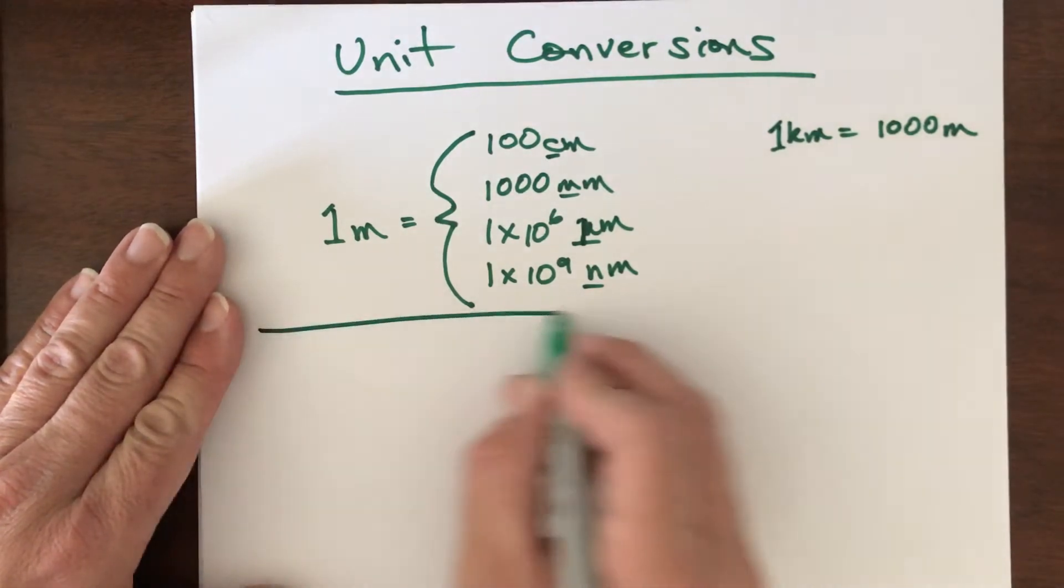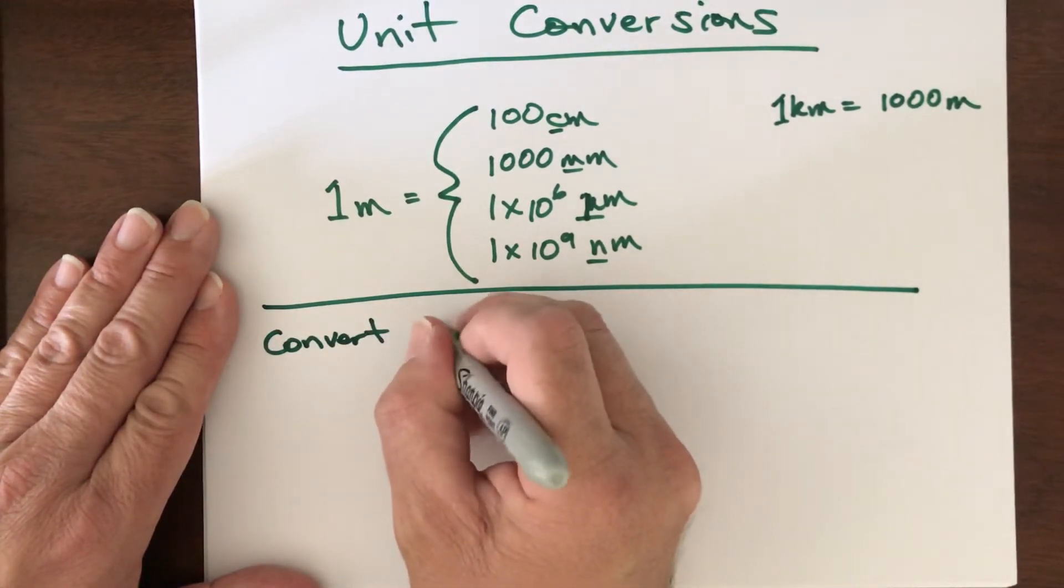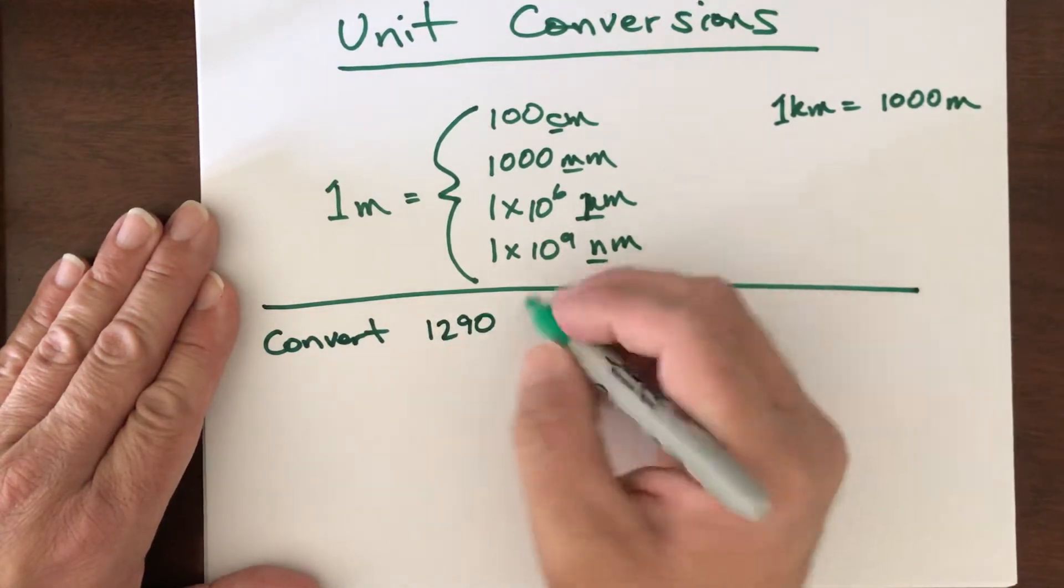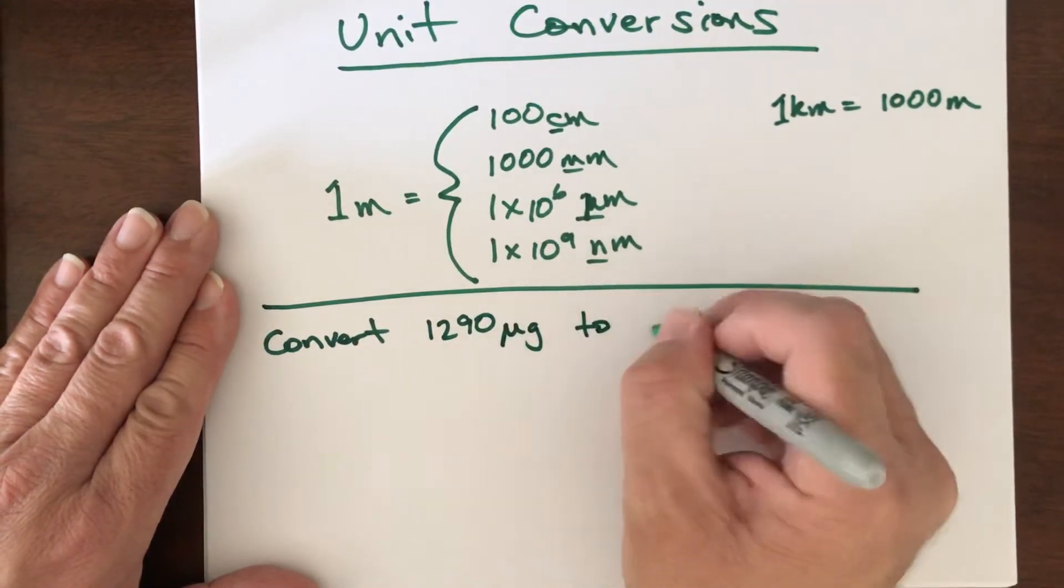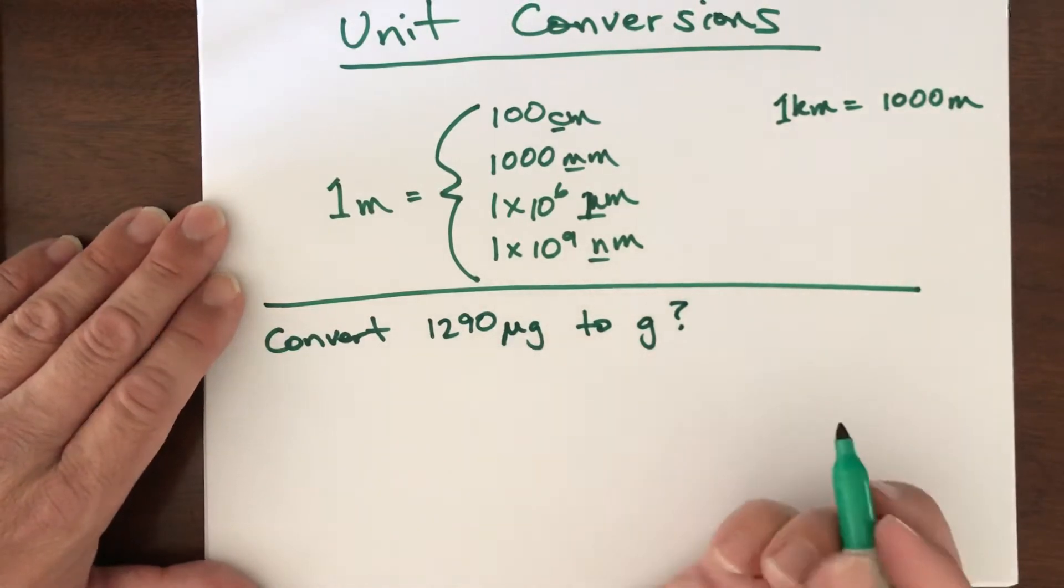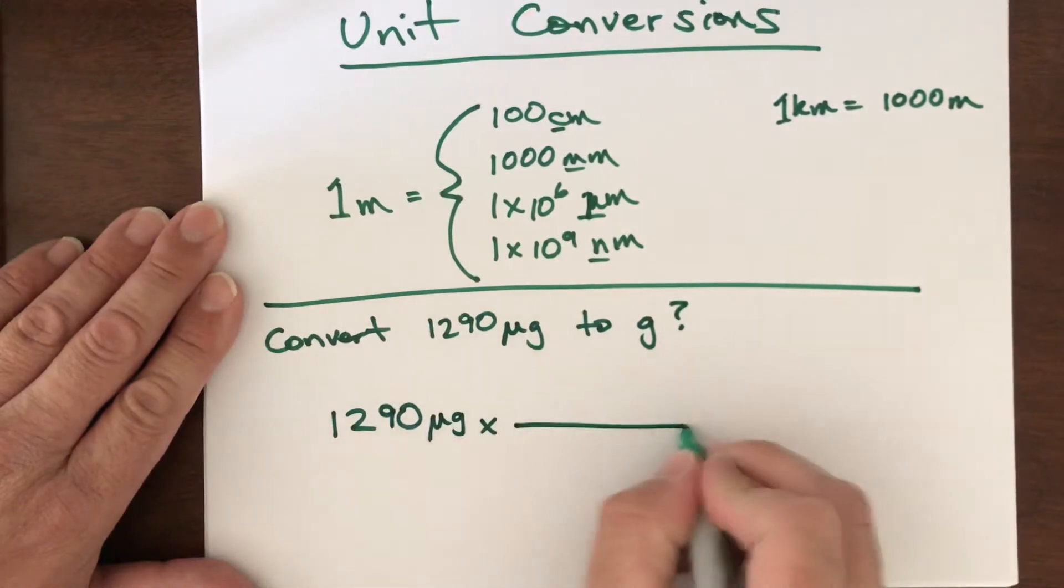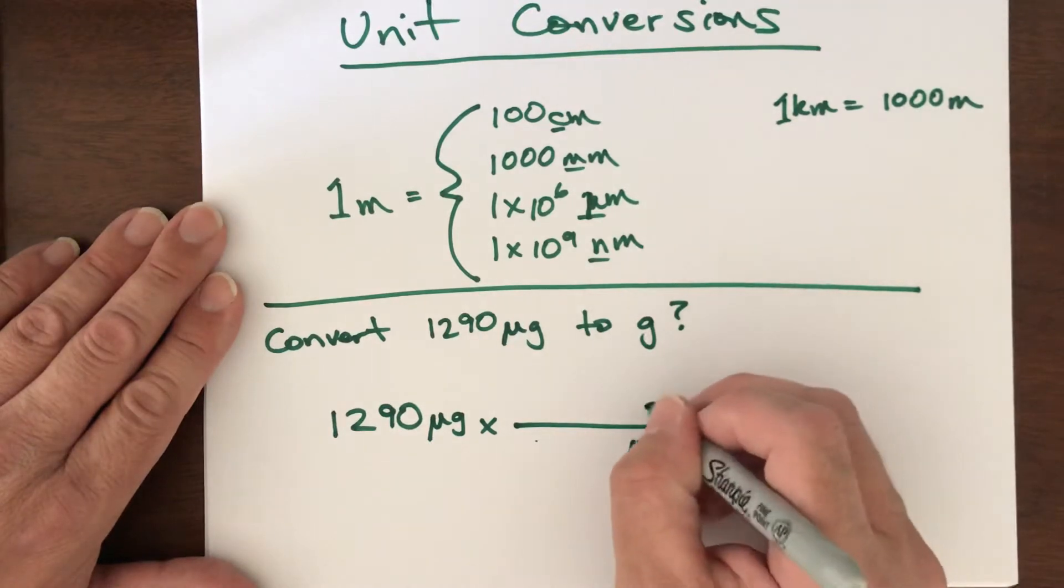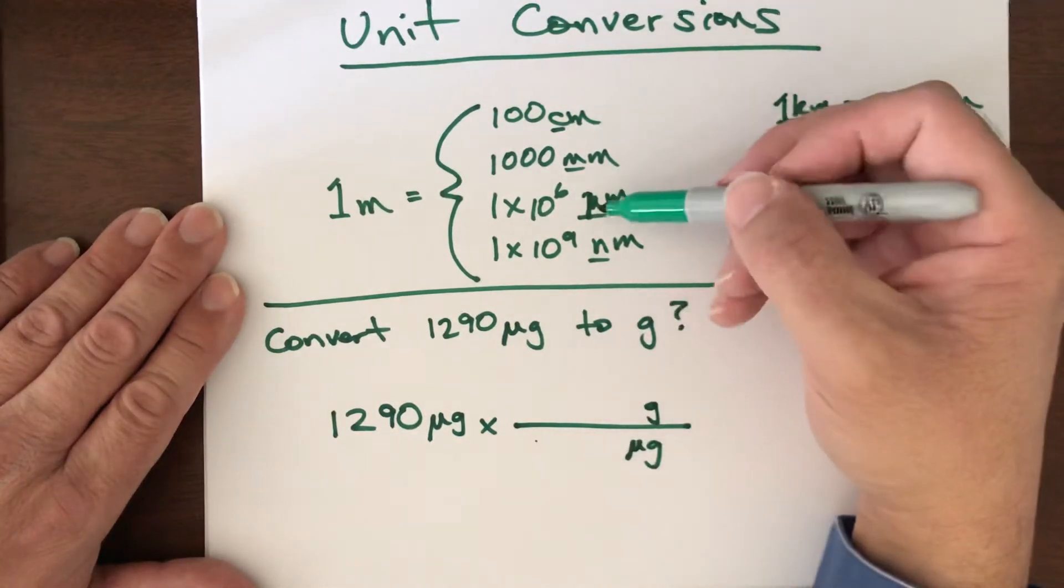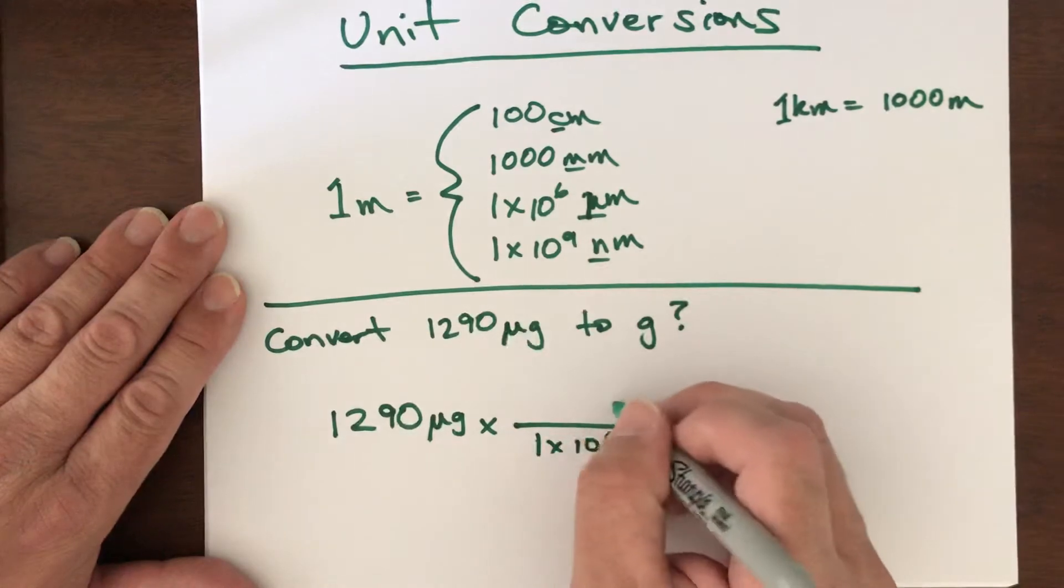Okay so let's say for example I asked you to convert 1290 micrograms to grams. The micro prefix again means 1×10⁶ or a million. So we would set that up where we have 1290 micrograms, and every time we do a conversion, whatever the unit we're trying to get rid of, that always matches the unit in the denominator. The unit we're going to goes in the numerator. So micro corresponds to a million or 1×10⁶ micrograms per every one gram.